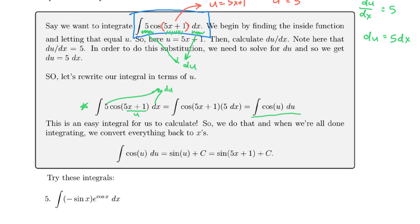The antiderivative of the cosine function is the sine function. And so we end up getting this expression here, sine of u plus c. And then because u is equal to 5x plus 1, we get sine of 5x plus 1 plus c as our answer.